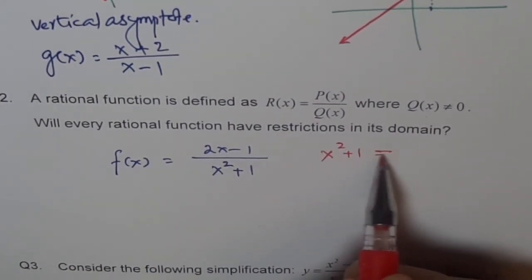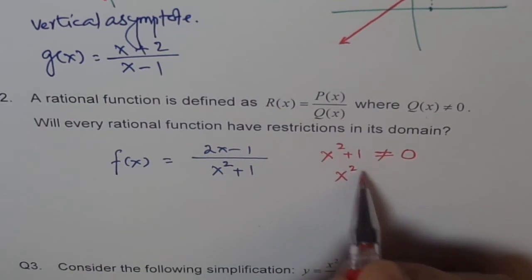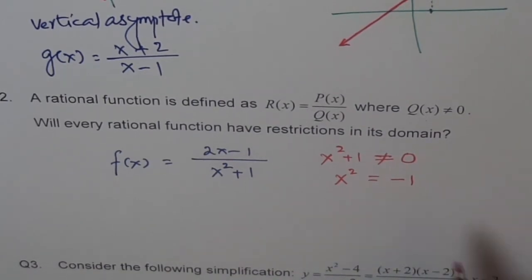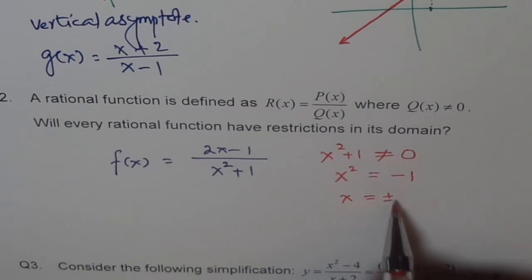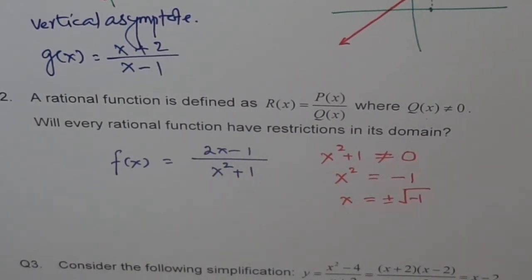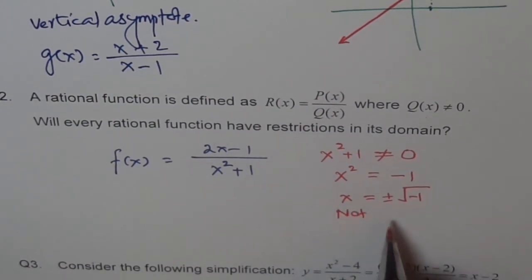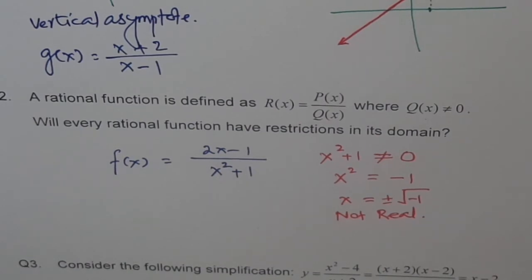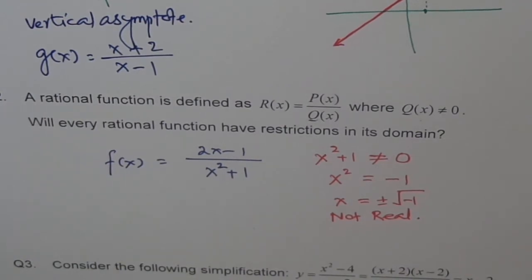We write the restriction: x² + 1 ≠ 0, which means x² ≠ −1. Since a square is always positive, you can never get a value equal to negative 1. We could also write x ≠ ±√(−1), but √(−1) is not real. So there is no restriction on this particular rational function. If the denominator is never zero, we will never have a restriction, and the domain will be all real numbers.